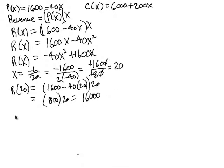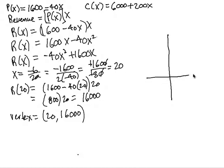So the location of the vertex then is going to be at an x coordinate of 20 and a y coordinate of 16,000. So we can put that on a graph. We have x is 20 and the y coordinate is 16,000.